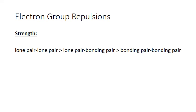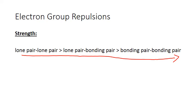Here's the order of strength of electron group repulsions from most to least. It turns out that lone pair–lone pair repulsions are the strongest, while bonding pair–bonding pair repulsions are the weakest.